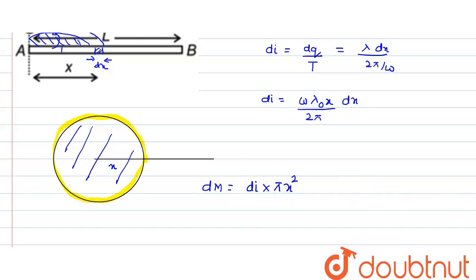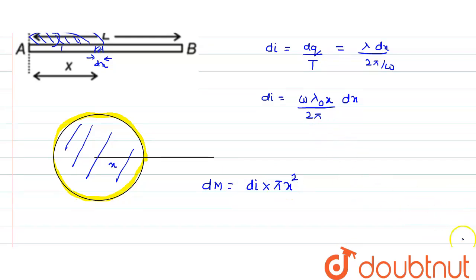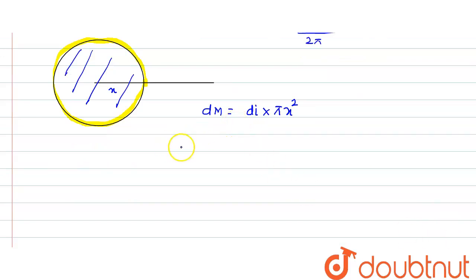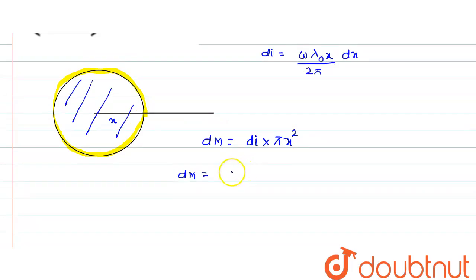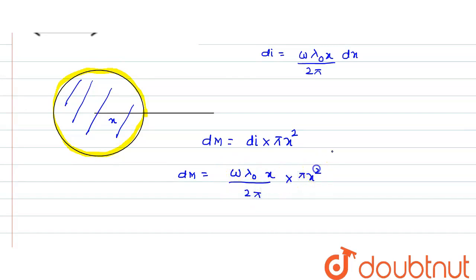The small magnetic dipole moment dm equals di multiplied by pi into x squared. We know the value of our current di, so we can substitute it to get dm. Then dm equals omega times lambda naught times x divided by 2 pi, multiplied by pi x squared, with dx also present.